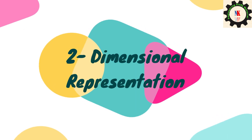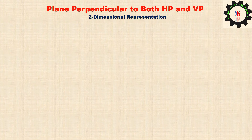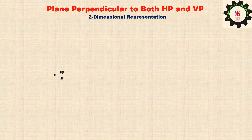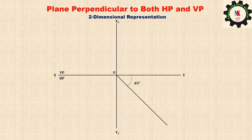Previously we have seen the three-dimensional representation. Now let us see in two-dimensional view. To represent in two-dimensional view, first we need to draw the true shape, as we know that the true shape appears in the side view. Draw the XY line, locate VP and HP. Draw X1Y1 line perpendicular to XY. Locate O and draw the mitre line. Draw the true shape in the side view, and here the plane surface is square.